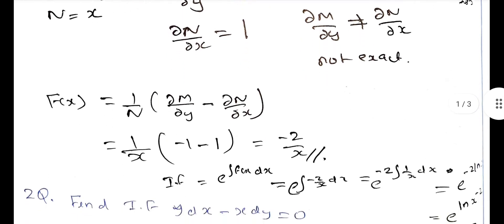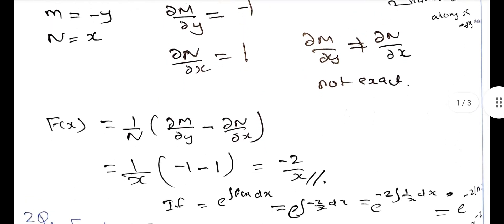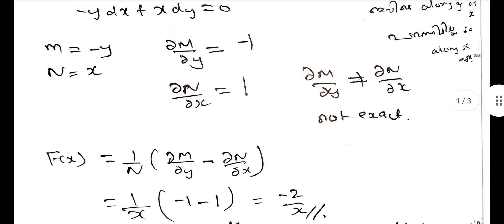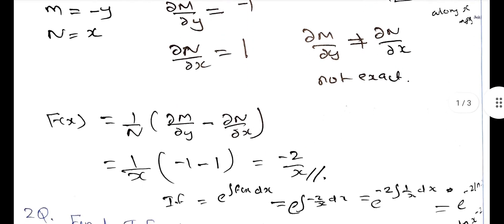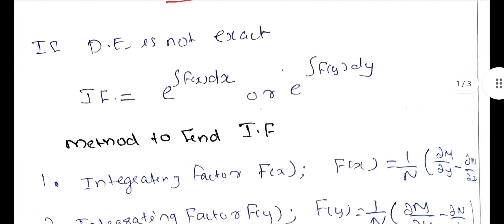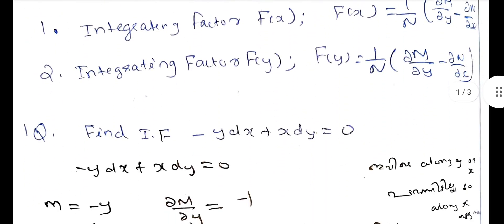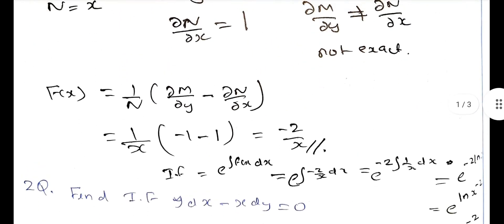Now we find f(x). f(x) equals 1/N times (dM/dy minus dN/dx), which is 1/x times (minus 1 minus 1), giving minus 2/x. Since f(x) is a function of x alone, we can find the integrating factor.